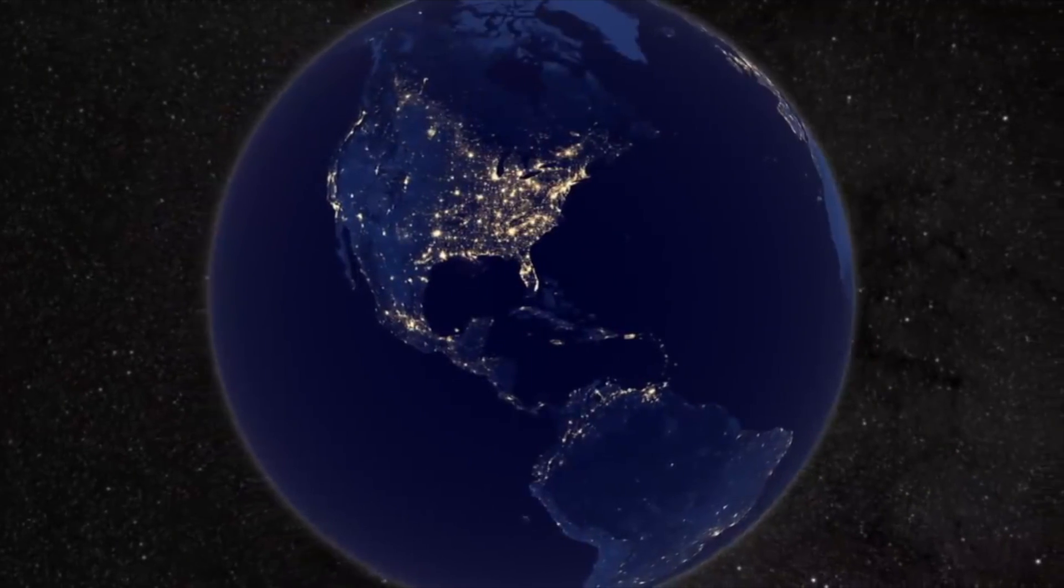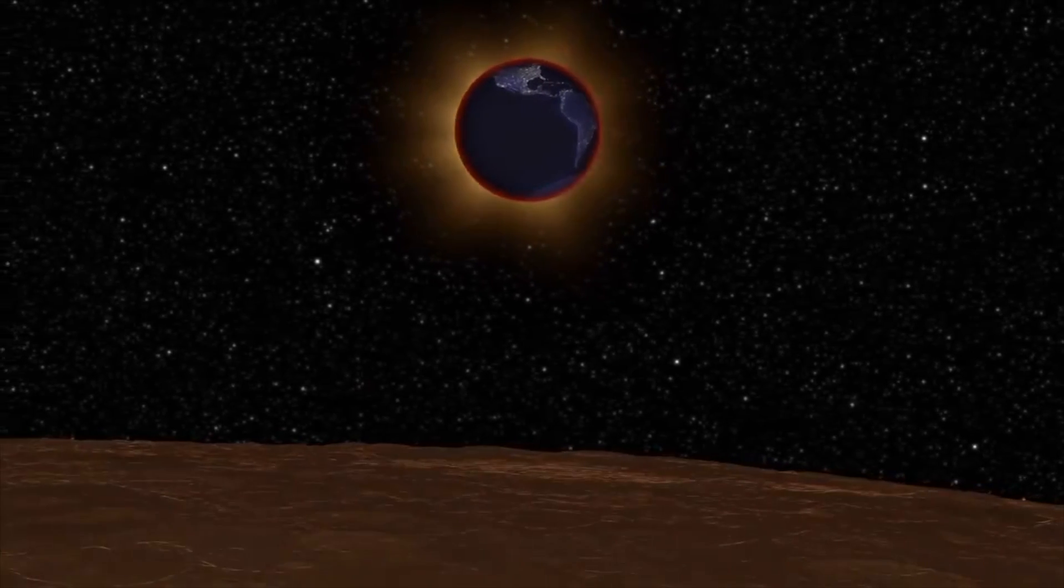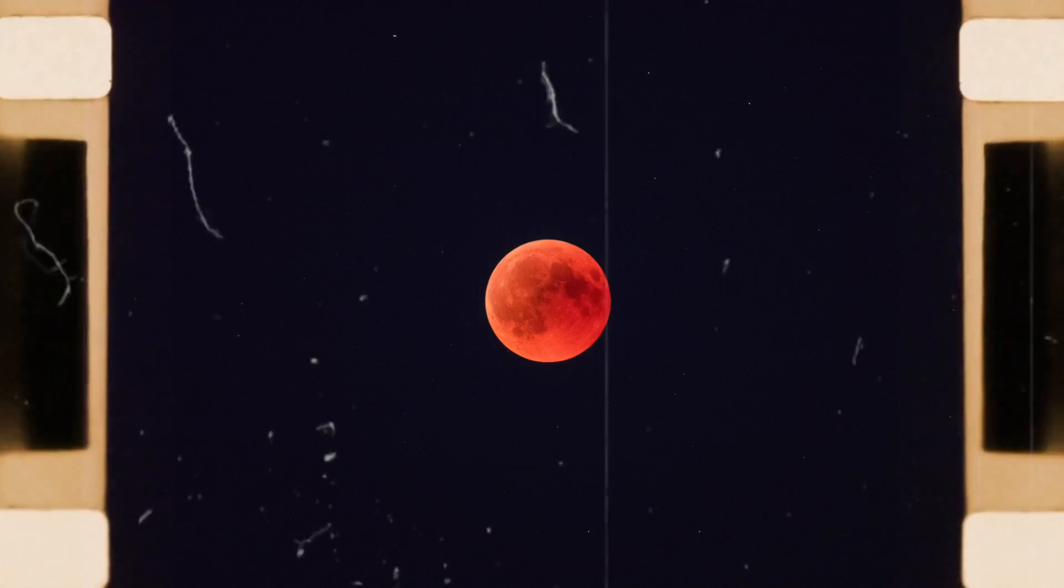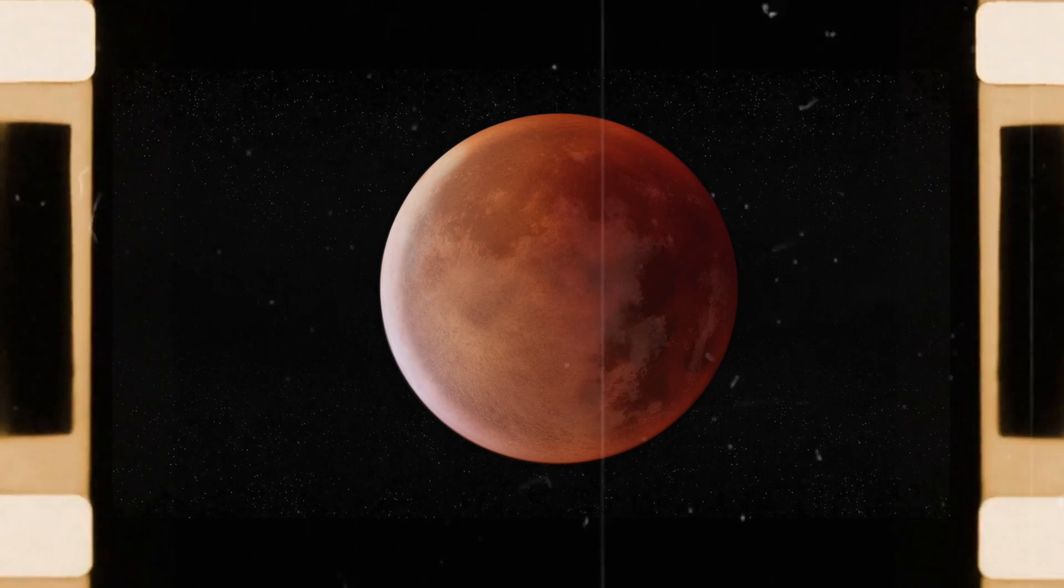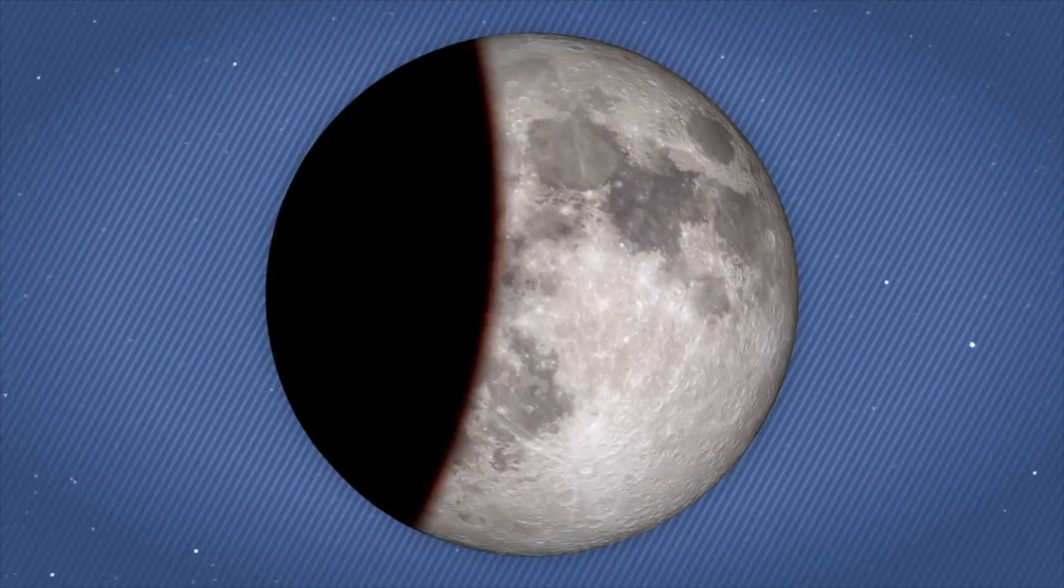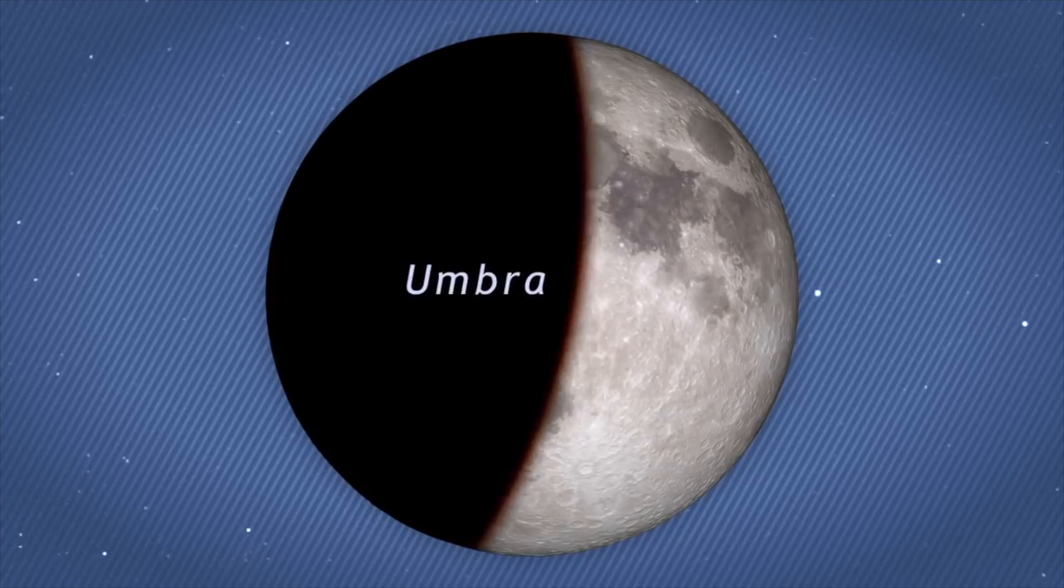It takes place when the sun, the full moon, and Earth are perfectly aligned and the moon is under the umbral shadow of the Earth. Most people are taken aback by the view of this sight due to the intense red color of the shadow.